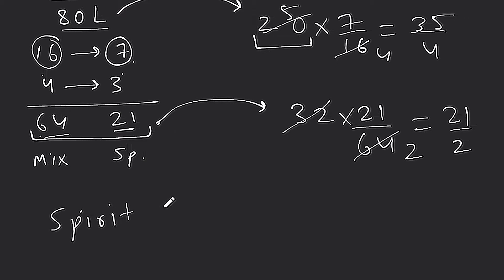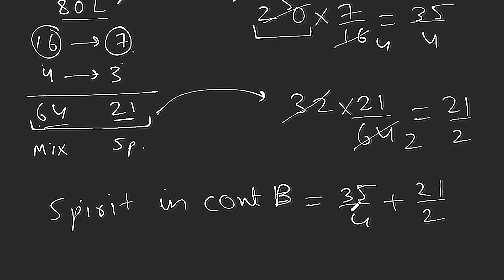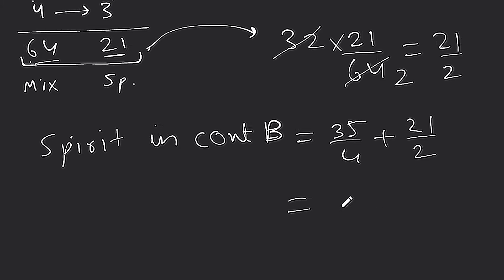Total spirit in container B is: from the first transfer 35/4, plus from the second transfer 21/2. So spirit in container B equals 35 by 4 plus 21 by 2, which gives us 35 plus 42 all over 4, equal to 77 by 4.